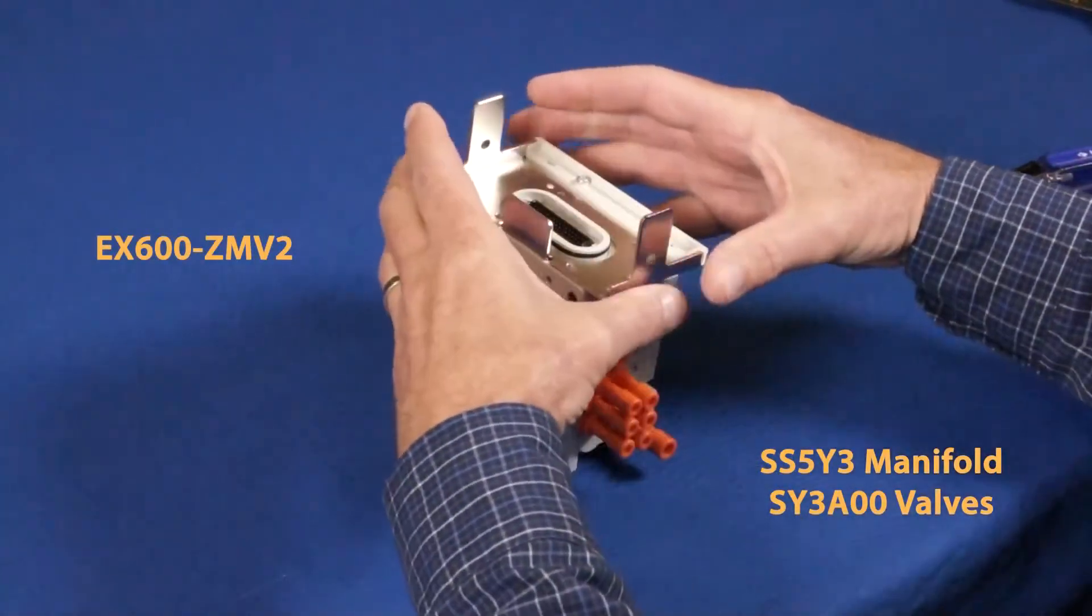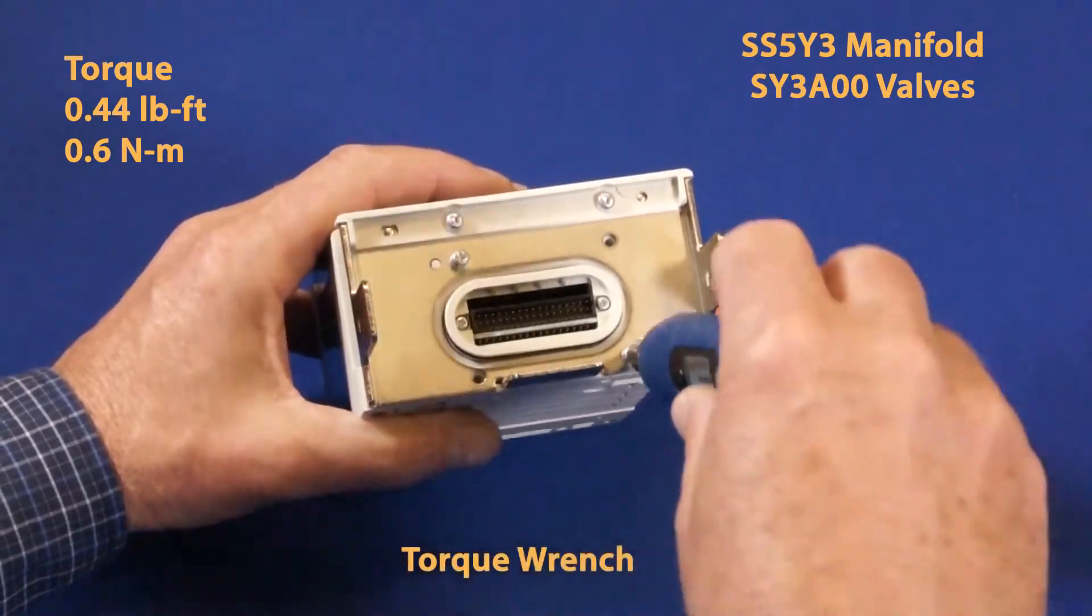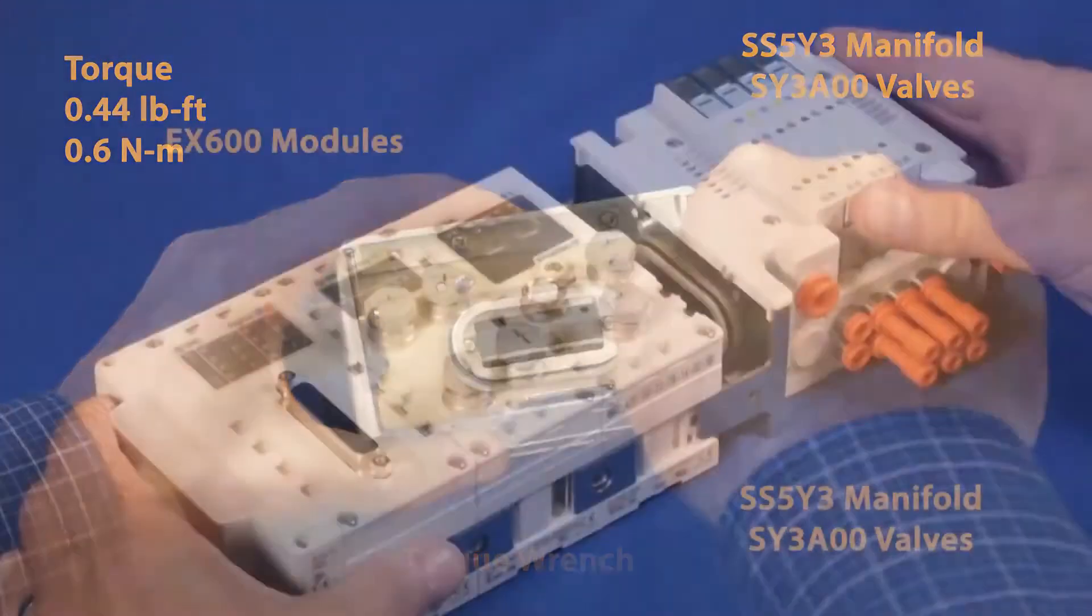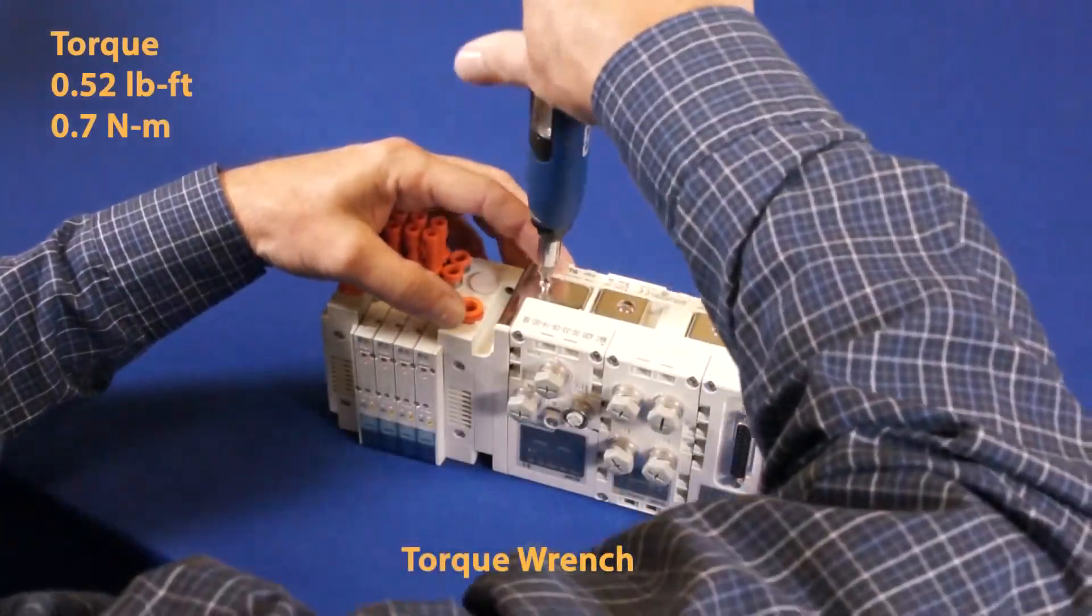On the valve manifold, attach the valve plate with a horizontal tab on the bottom. Then, the valve manifold will attach to the SI module. Tighten down the bracket to spec.